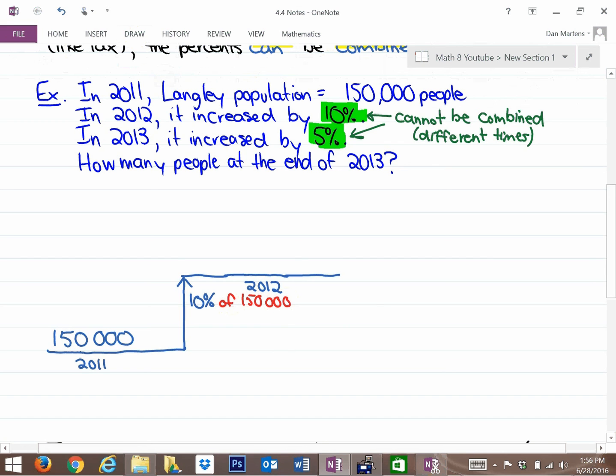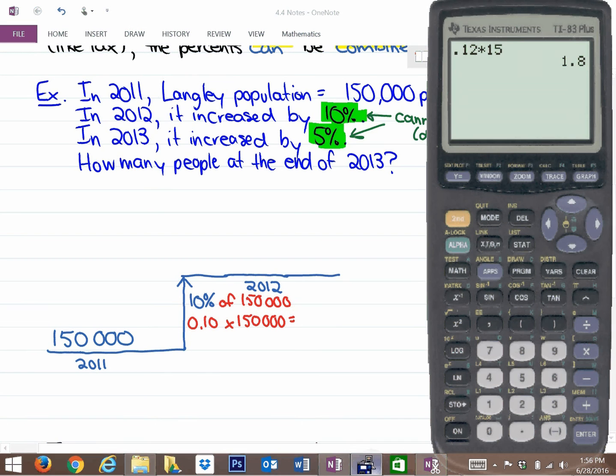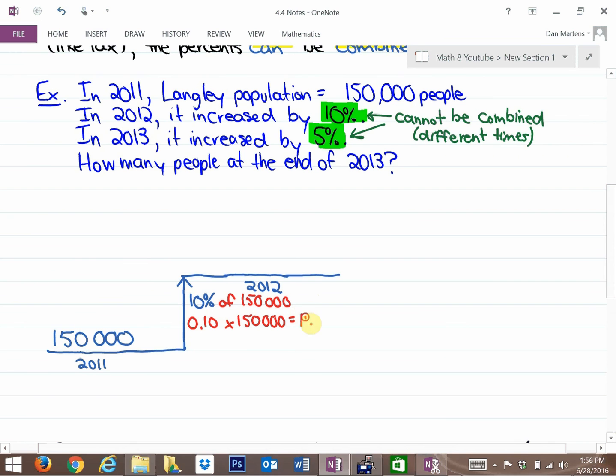That's going to be 10% as a decimal, which is 0.10, times 150,000 people. This makes sense because 10% is one-tenth of it. If you do this a different way, it's absolutely fine, but it's going to be a 15,000 person increase.